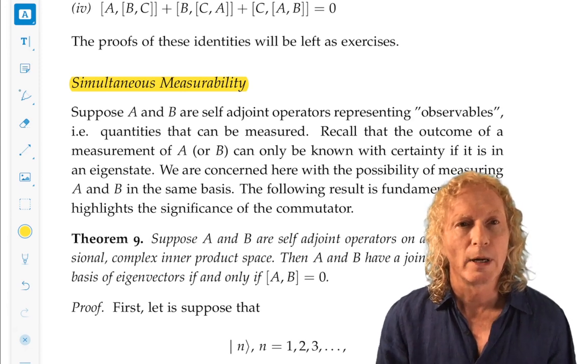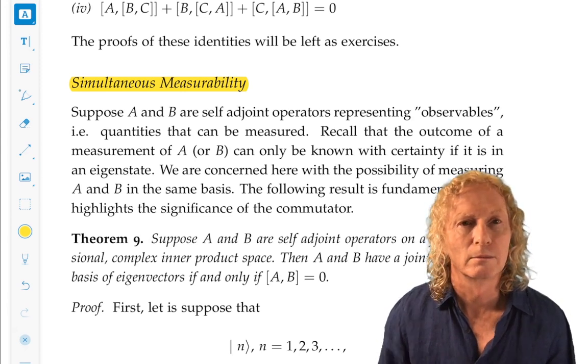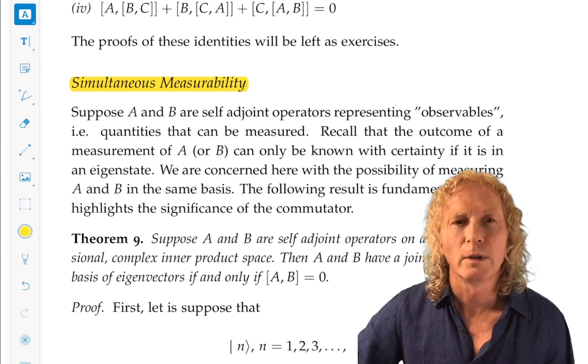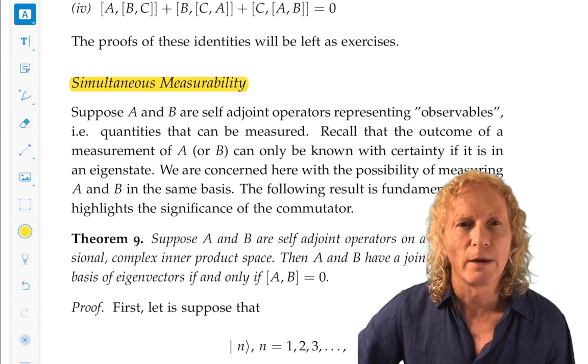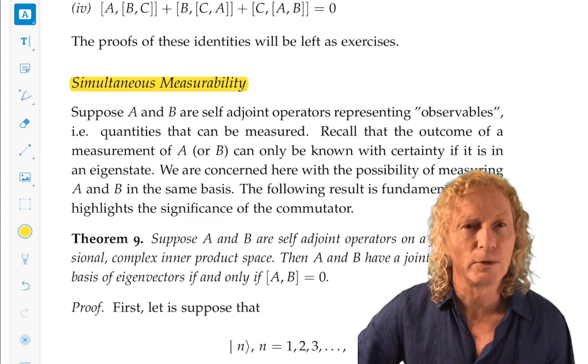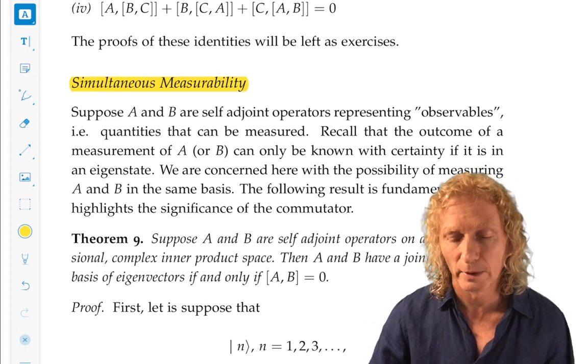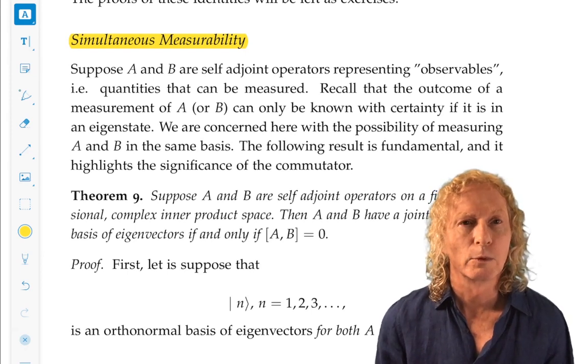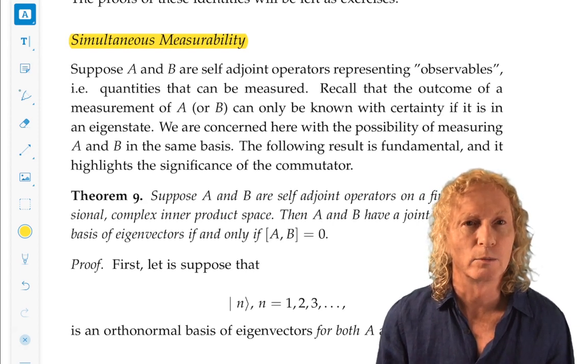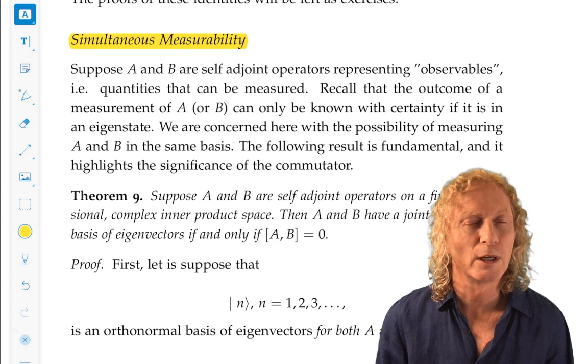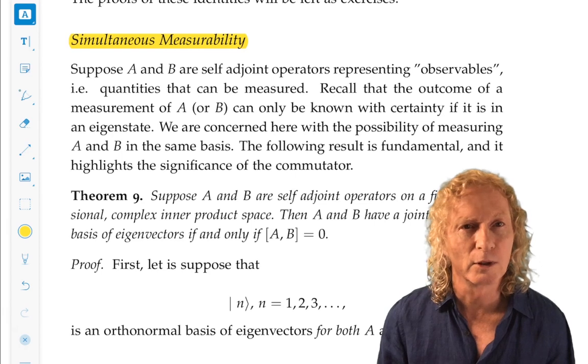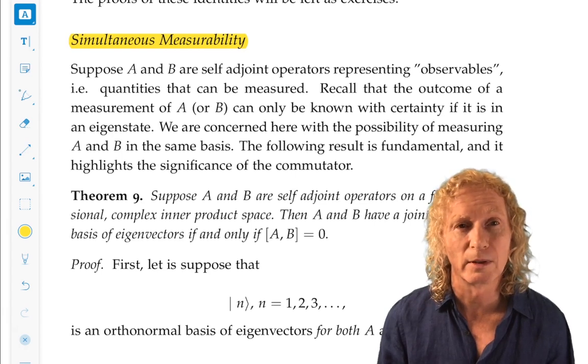Suppose we measure A and then B right afterwards. What are we going to get? Well, suppose that A and B have a common orthonormal basis of eigenvectors. And that's what we're concerned with in this section. We measure A, we get an eigenvalue. The state becomes the eigenstate corresponding to that eigenvalue. We measure B. We know exactly what we're going to get, because if it's an eigenstate, it's going to be the eigenvalue corresponding to that state.